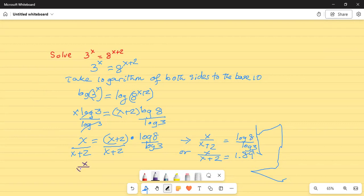So, x divided by x plus 2 is equal to log of 8 divided by log of 3, which is equal to 1.893.